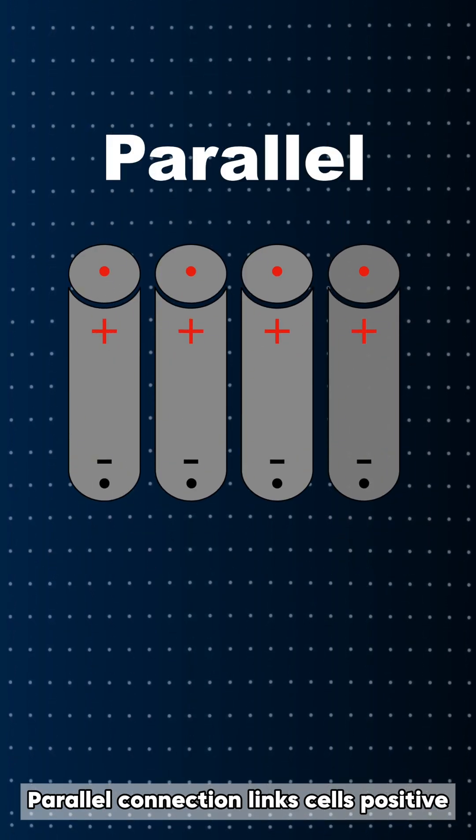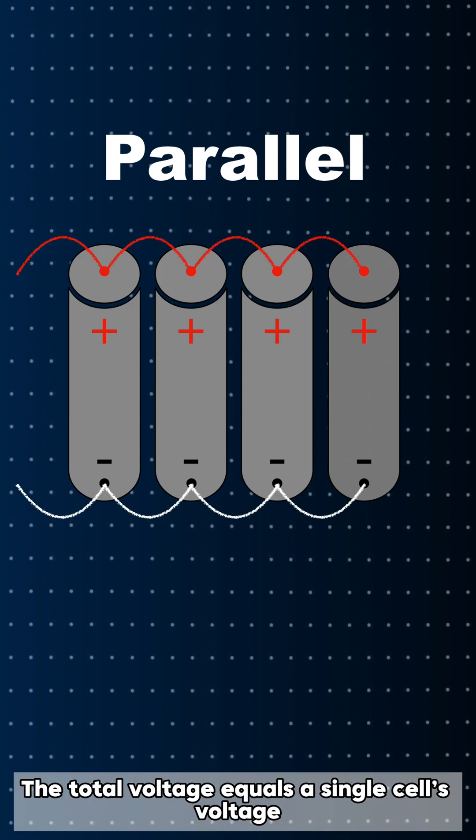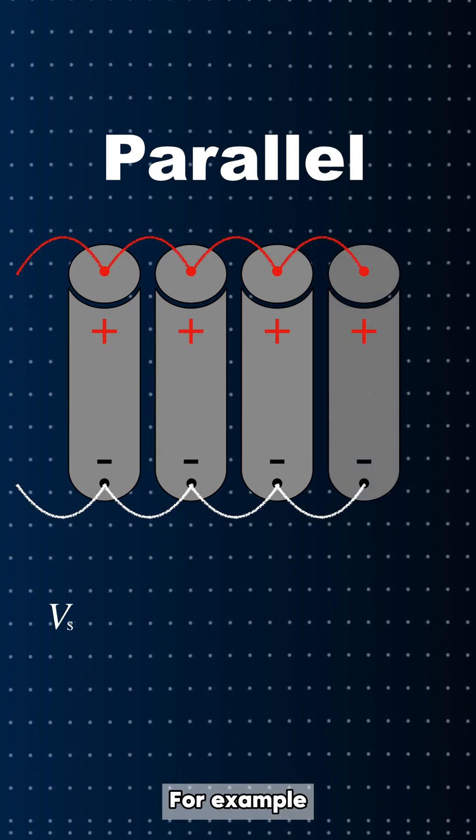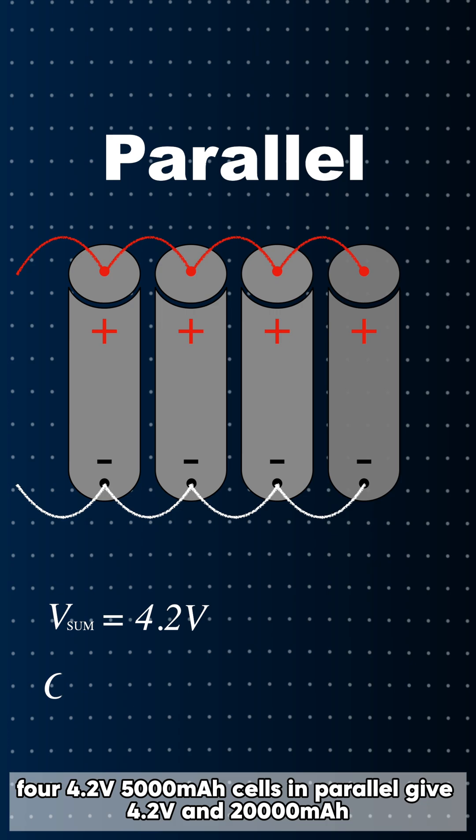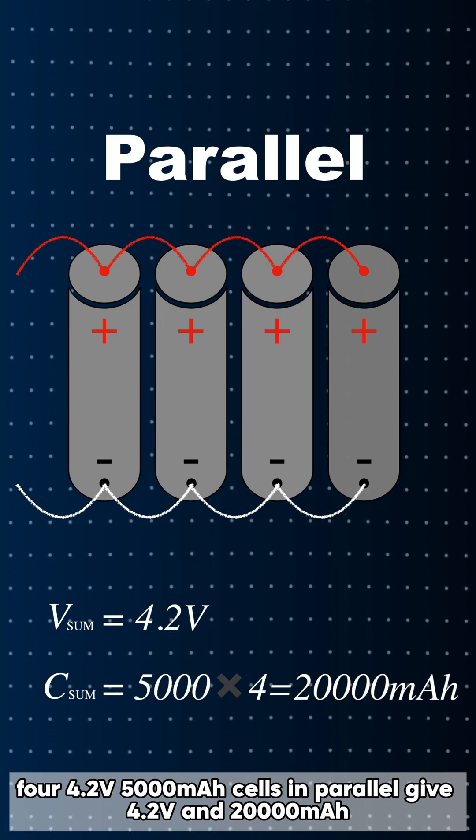Parallel connection links cells positive to positive and negative to negative. The total voltage equals a single cell's voltage, while the total capacity is the sum of all cells. For example, four 4.2 volts 5,000 milliamp hours cells in parallel give 4.2 volts and 20,000 milliamp hours.